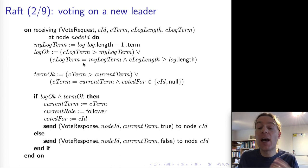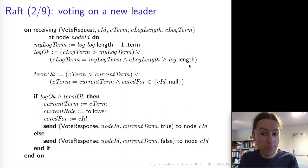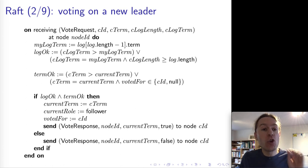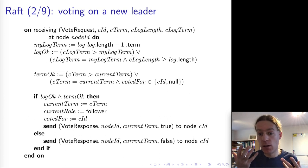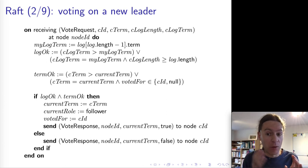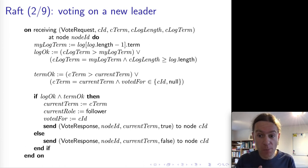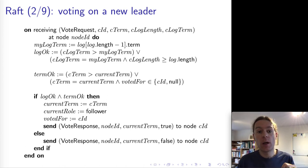However, if the candidate has a shorter log or a lower log term, we will not accept it. The purpose of this check is to ensure the candidate has an up-to-date log, because we don't want to vote for a candidate with a really outdated log — that might cause us to violate the property that once a message has been committed, it is not going to change anymore. So we must vote only for candidates whose log is sufficiently up-to-date.